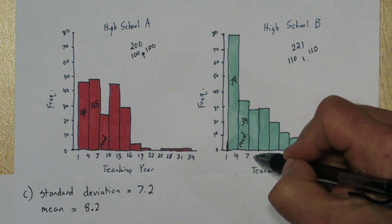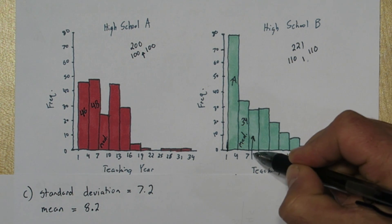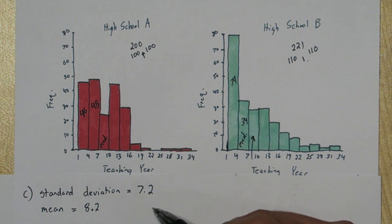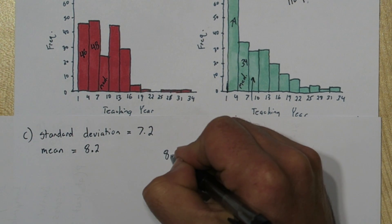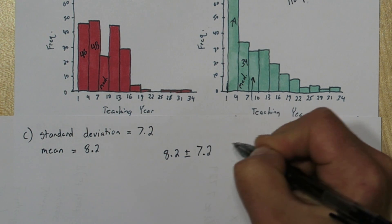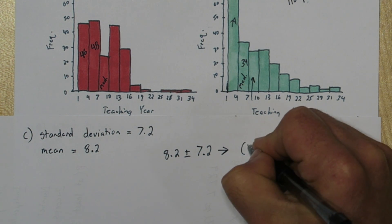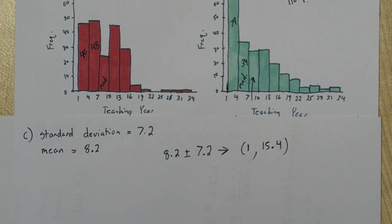Well, this mean of 8.2 is somewhere in this bin right here, the 7-8-9 bin. So let's start by just adding one standard deviation and subtracting one standard deviation from this mean, to come up with some sort of an interval of interest. So 8.2 plus or minus one standard deviation, 7.2, gives us this interval of 1 to 15.4.